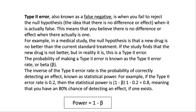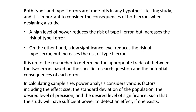For example, if the Type 2 error rate is 0.2, then the statistical power is 1 minus beta: 1 minus 0.2 equals 0.8, meaning that you have an 80% chance of detecting an effect if one exists. Power is equal to 1 minus beta. Both Type 1 and Type 2 errors are trade-offs in any hypothesis testing study. A high level of power reduces the risk of Type 2 error but increases the risk of Type 1 error.